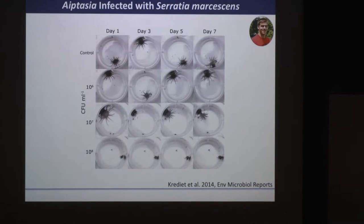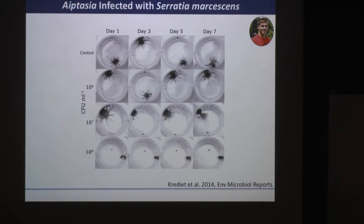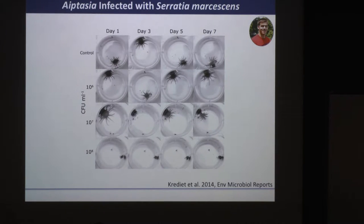After 24 hours at the highest concentration, we start to get retraction of the tentacles, and ultimately tissue necrosis as the final stage of this disease, just as we see in coral. You'll actually end up with kind of a soup of degraded anemone that starts to smell really bad after a few days.